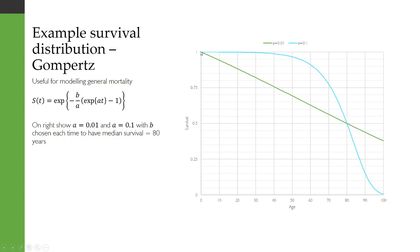In the green, we have one where this A, this shape parameter, is 0.01, and in the blue, we have an example where A is 0.1. So you can see these are quite different curves, and this blue one is quite close to a general mortality curve. That's why Gompertz is useful for modeling general mortality.